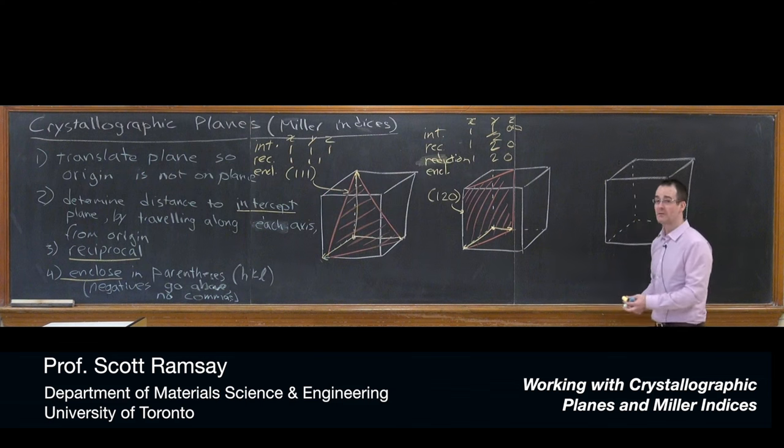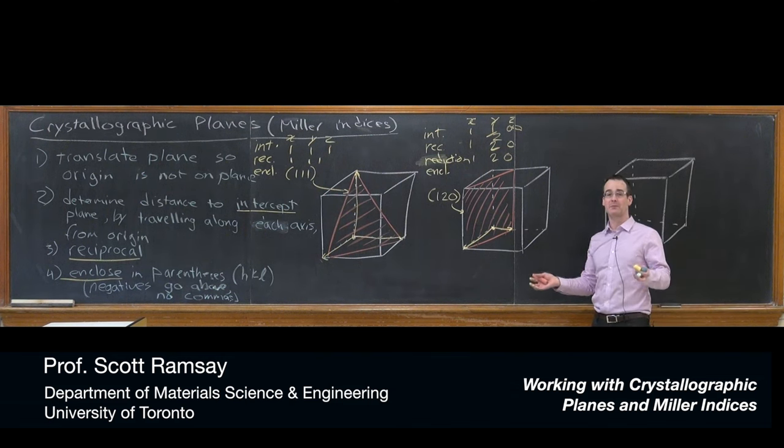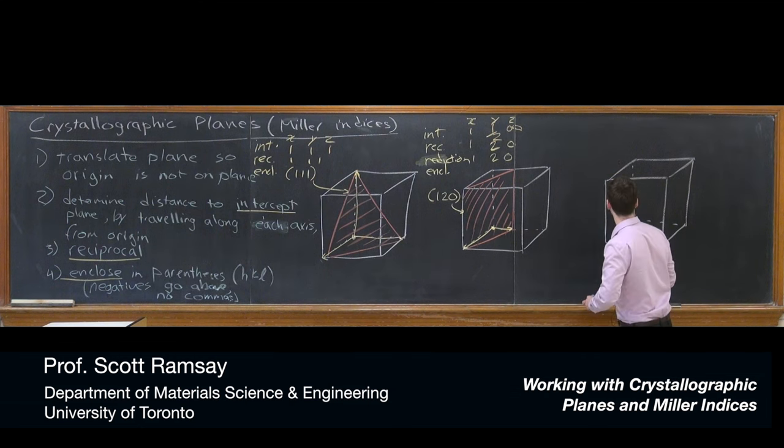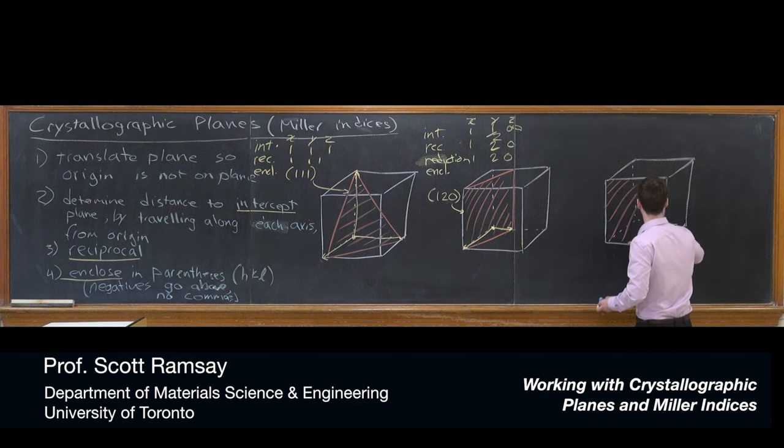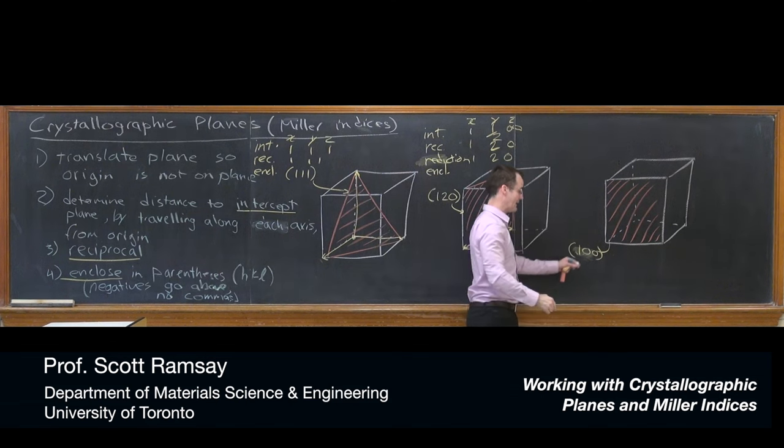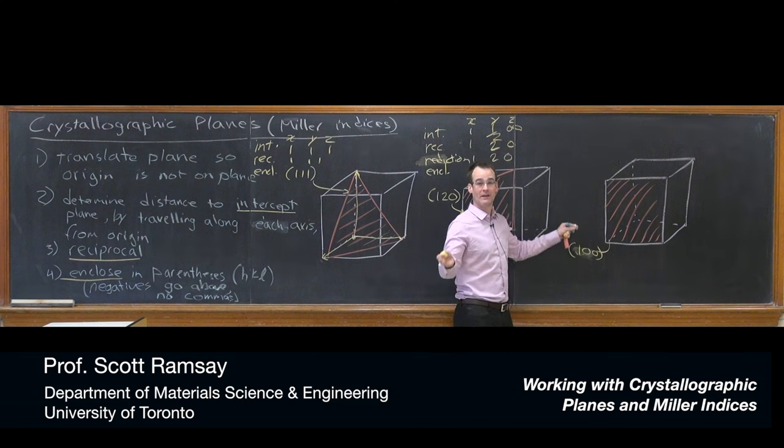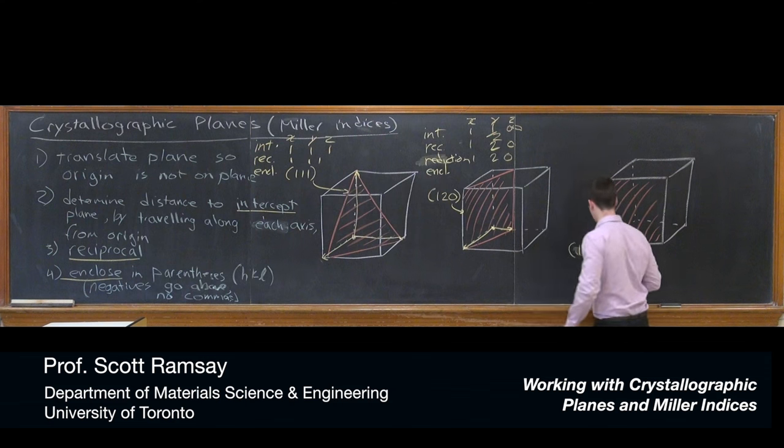Finally, we could look at families of planes. These are planes that look the same in two dimensions - they've got the same atoms in the same positions, the same linear packing fraction. For example, the faces of a cube. The front face is the (1,0,0). The zeros in the Y and Z positions tell you it's parallel to Y and Z. It crosses through only the X axis.